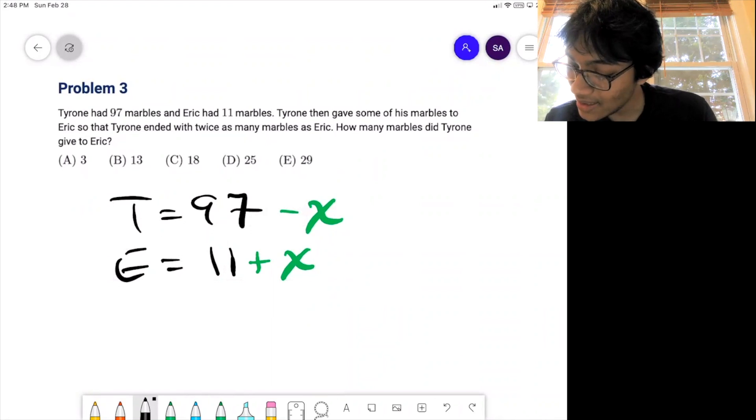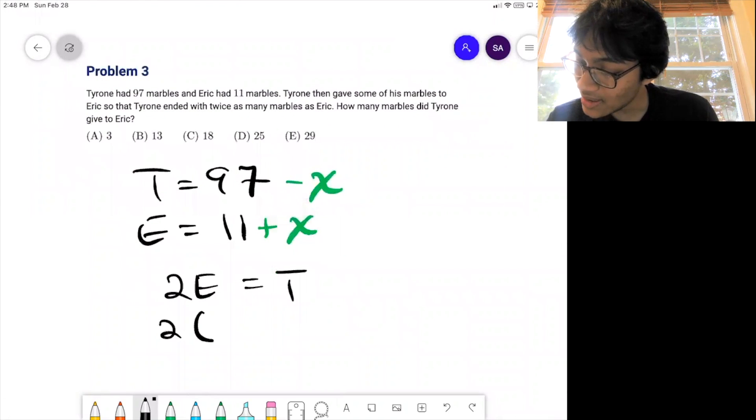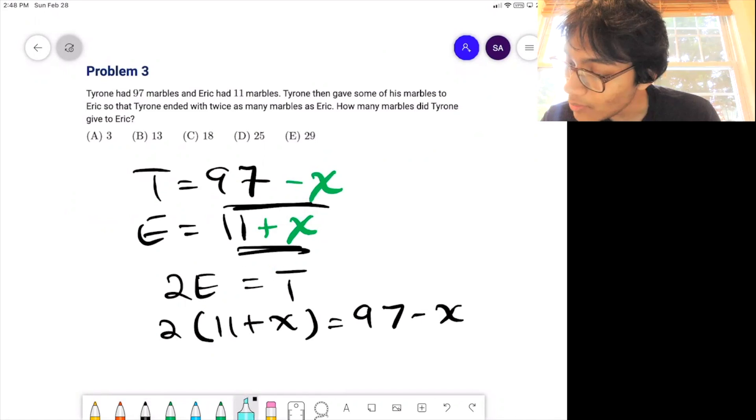So we can say that twice as many marbles as Eric is how much Tyrone has. So how much does Eric have? Well, he has 11 plus x. And how much does Tyrone have? He has 97 minus x, because he gave some away, right? So our goal is to find how many marbles Tyrone gave, which is x. We want to find what x is.